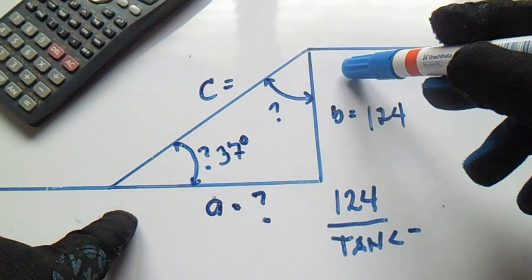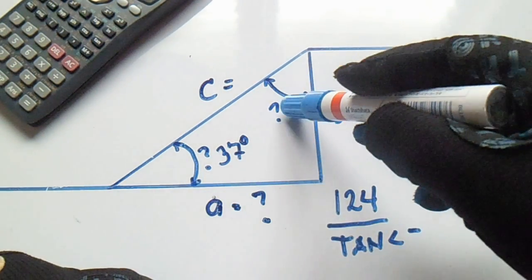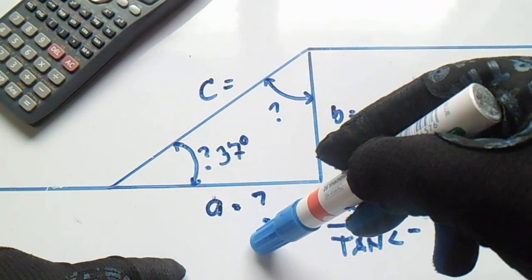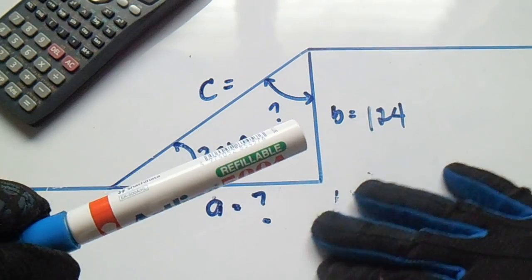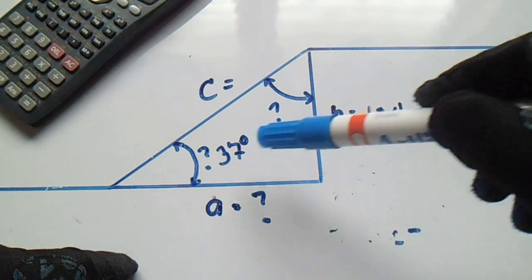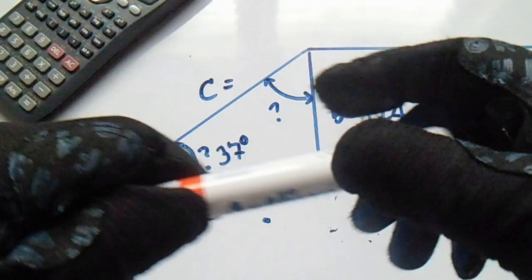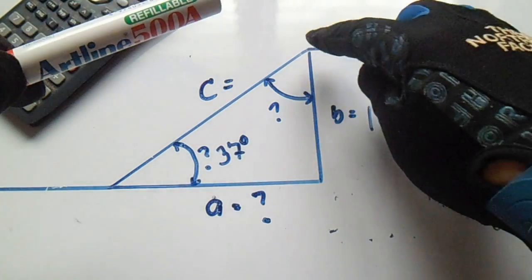So this angle, we have a question mark of this angle and also this length of side C and A. Okay, our given is B and also this degree, 37 degrees, B is 124 for this side.